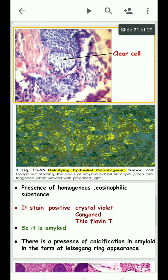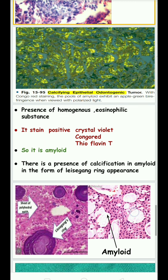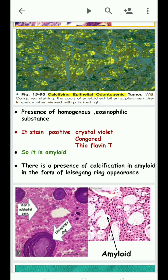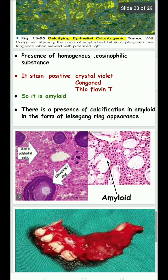The sheets of polygonal epithelial cells contain homogeneous eosinophilic material. This material can be stained using crystal violet, Congo red, and thioflavin — stains used for amyloid. The amyloid stain is positive. Later the amyloid material gets calcified, giving a Liesegang ring appearance.